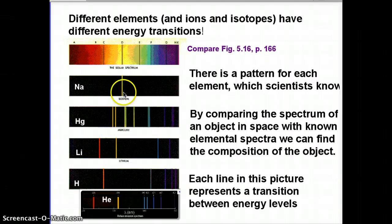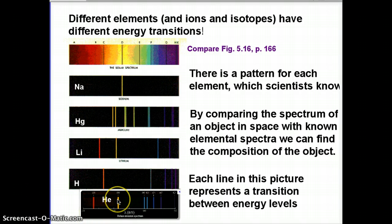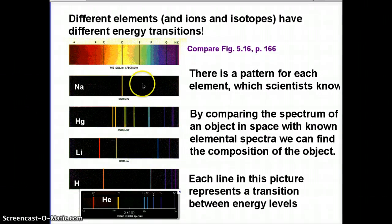We can start matching these other things up. These lines sort of match up with hydrogen, so there's the hydrogen in the Sun. And if you look around, my helium spectrum is not to scale, but these correspond to two transitions in the solar spectrum. You can start to see how we can figure out the composition of objects — what elements they're made of — by comparing the spectrum of an object in space with the spectrum of known elements figured out here on Earth and by doing calculations.